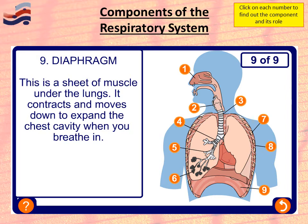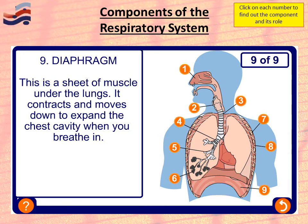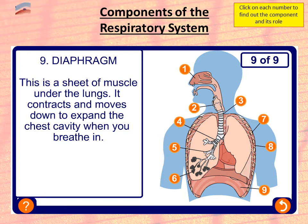We're going to look at nine different components of the respiratory system, starting at number one: the nasal passage. This is basically how we get all of that air into the body when we breathe in during inhalation.